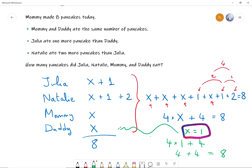Okay. And what does that say about our original equation? It says that how many pancakes did Daddy eat? X is one, so Daddy ate one pancake. Mommy ate X pancakes, so she also ate one pancake. And Julia ate one plus one is... Two. Two pancakes. And Natalie ate one plus one plus two. So how much is that? One plus one plus two is... Four. Four. So there you go, we solved the problem. Daddy ate one pancake, Mommy ate one pancake, Julia ate two pancakes, and Natalie ate four pancakes.